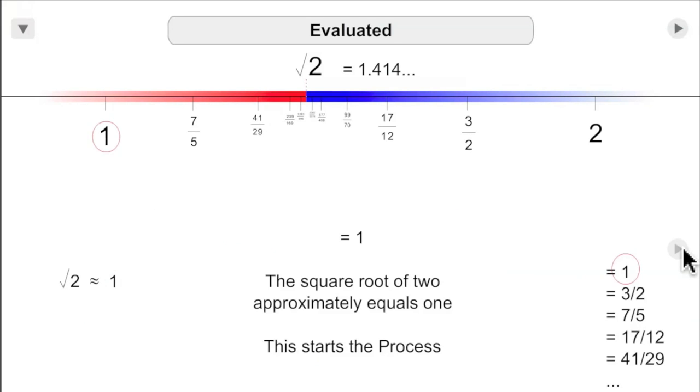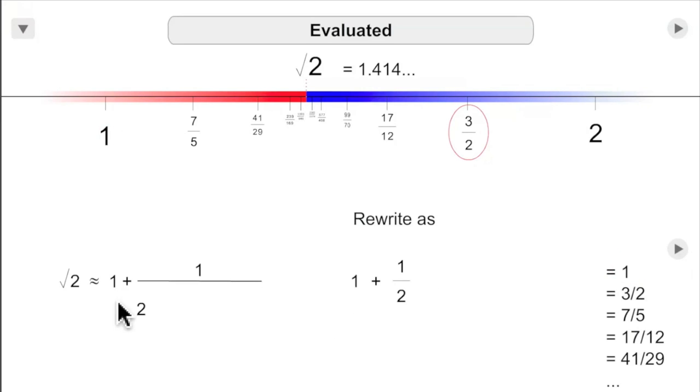And here we go. Square root of 2 approximately equals 1. This starts the process. You rewrite this as 1 plus 1 half. You get 3 halves. Now we're working top to bottom on this. Now we've got 1 plus 1 over 2 plus 1 half, which is 5 halves.